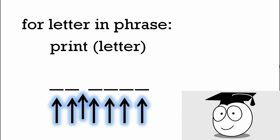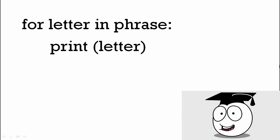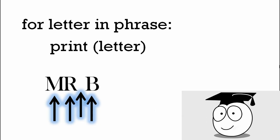The for loop looks through each character in the string phrase. So in our example, it would print m r space b e a n.